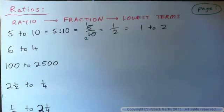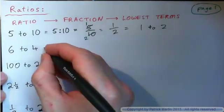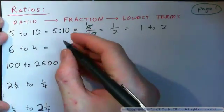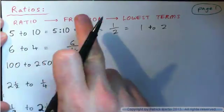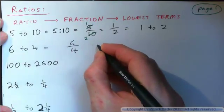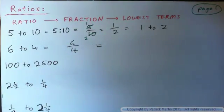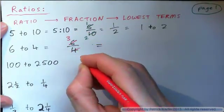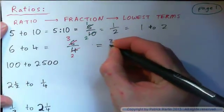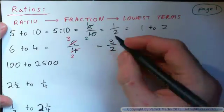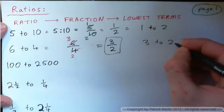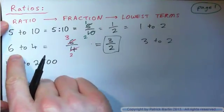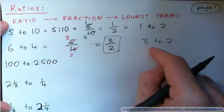6 to 4. Write this as a fraction first, put it in lowest terms, and see what you get. 6 to 4 is the same thing as 6 over 4. Put that fraction in lowest terms: 2 into 6 goes 3 times, 2 into 4 goes twice, so we get 3 over 2. That's the answer — 3 over 2, which is the same thing as 3 to 2. So if there were 6 boys for every 4 girls, you could also say there's 3 boys for every 2 girls.